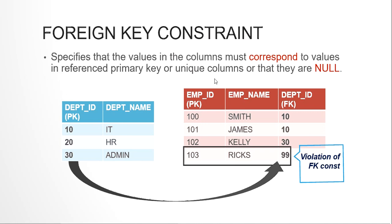Before that, let me give a quick recap of what constraints are. Constraints are basically rules and regulations that help us maintain data accuracy and integrity in our schemas. They help us avoid ending up with junk data in our tables. One of those constraints is the foreign key constraint.